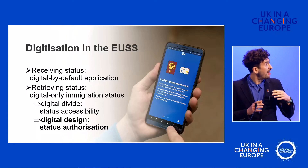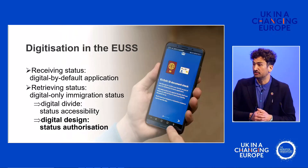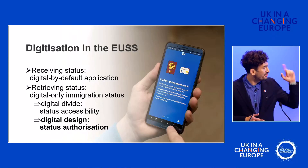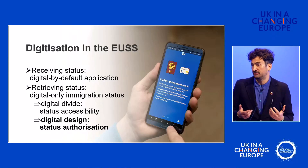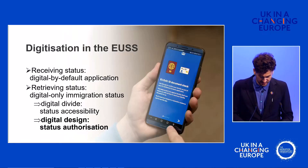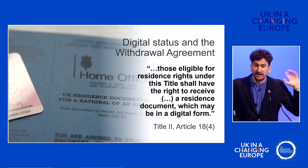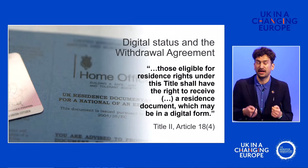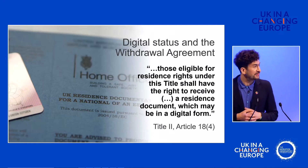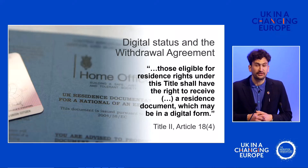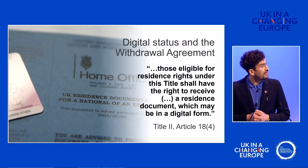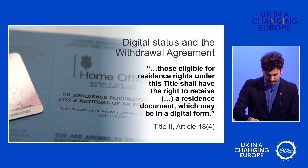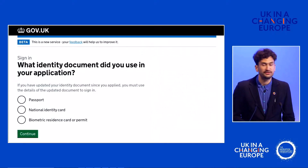That raises a couple of types of problems. One relates to digital divide and discrimination — Charlotte and Catherine already spoke to those. I'm going to talk about the digital design itself: what does it do and how does it reconfigure immigration status? The digital status may not be incompatible with the withdrawal agreement because the UK asked for it to be included and the EU side agreed. The withdrawal agreement in Title 2, Article 18 says those eligible for residence rights 'shall have the right to receive a residence document which may be in a digital form.' So a document in a digital form is fine. But it's not a document — it's a website.